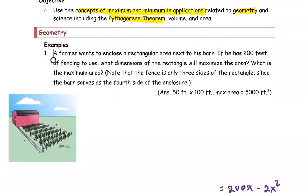For the first problem involving geometry, a farmer wants to enclose a rectangular area next to his barn. If he has 200 feet of fencing to use, what dimensions of the rectangle will maximize the area? What is that maximum area? Note that the fence is only three sides of the rectangle since the barn serves as the fourth side of the enclosure.